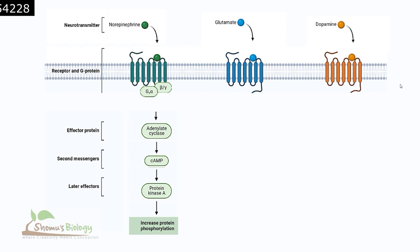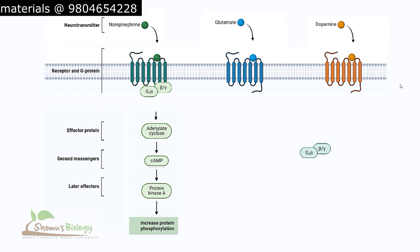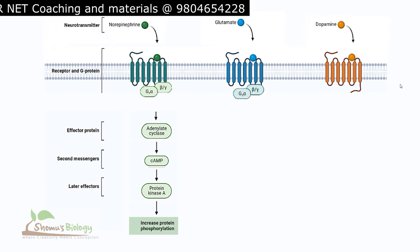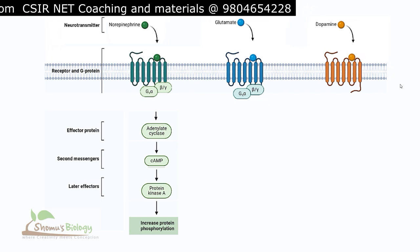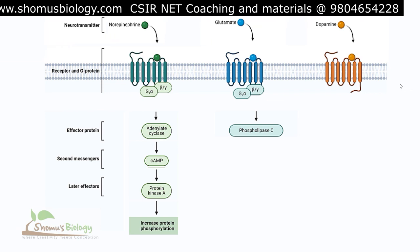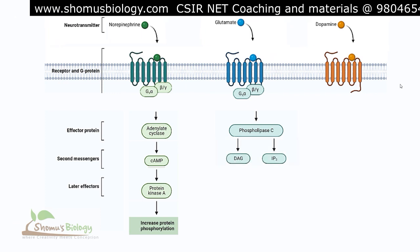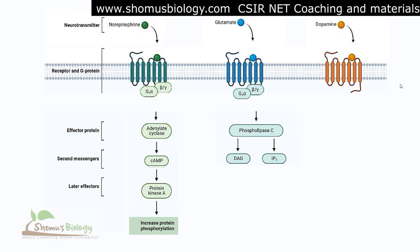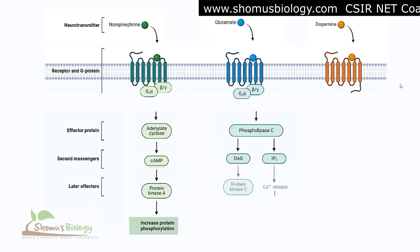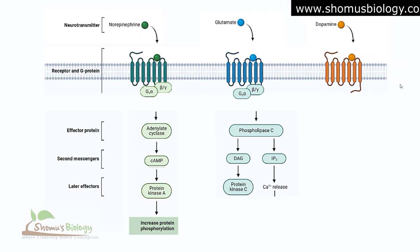When glutamate binds to its GPCR, it triggers the association of the Gq alpha-beta-gamma G protein. Again, the alpha subunit dissociates from beta-gamma and activates phospholipase C as the effector protein. Phospholipase C breaks down its substrate into two second messengers: DAG (diacylglycerol) and IP3 (inositol trisphosphate). DAG further activates protein kinase C as a downstream effector molecule, while IP3 causes the release of calcium from the internal compartments of the cell.